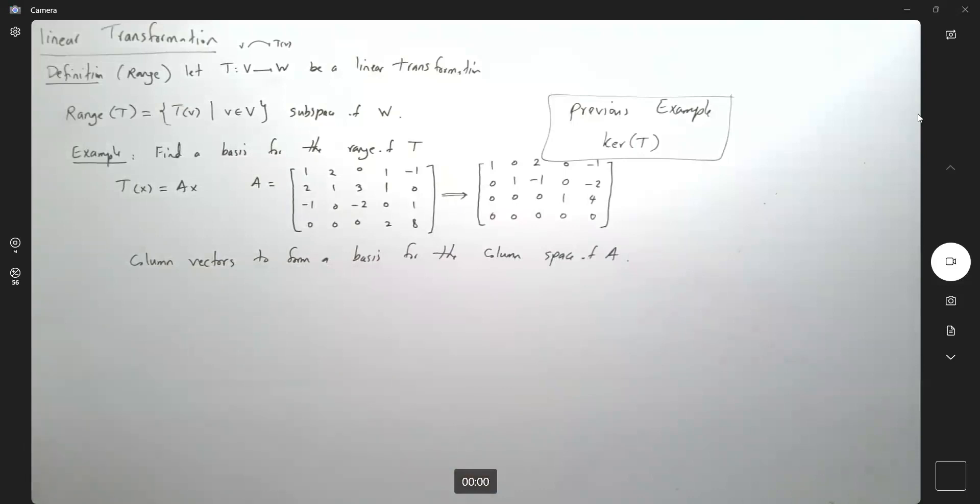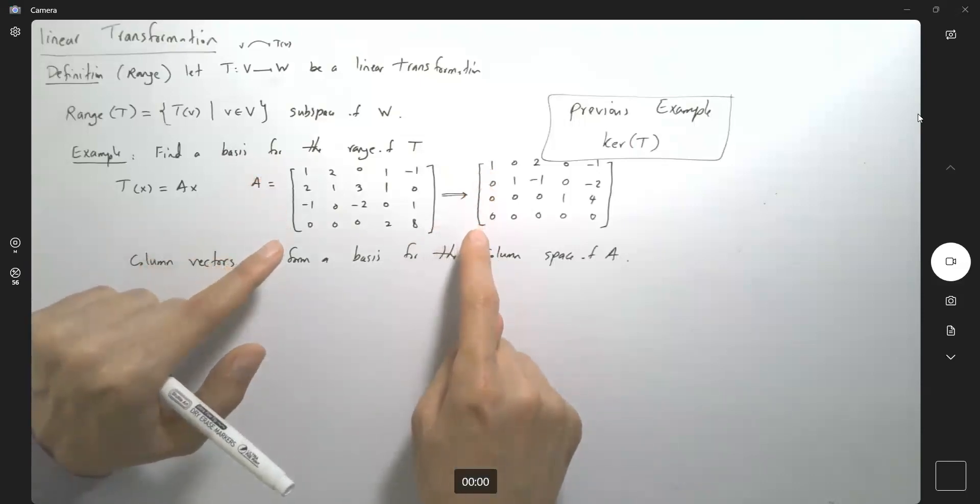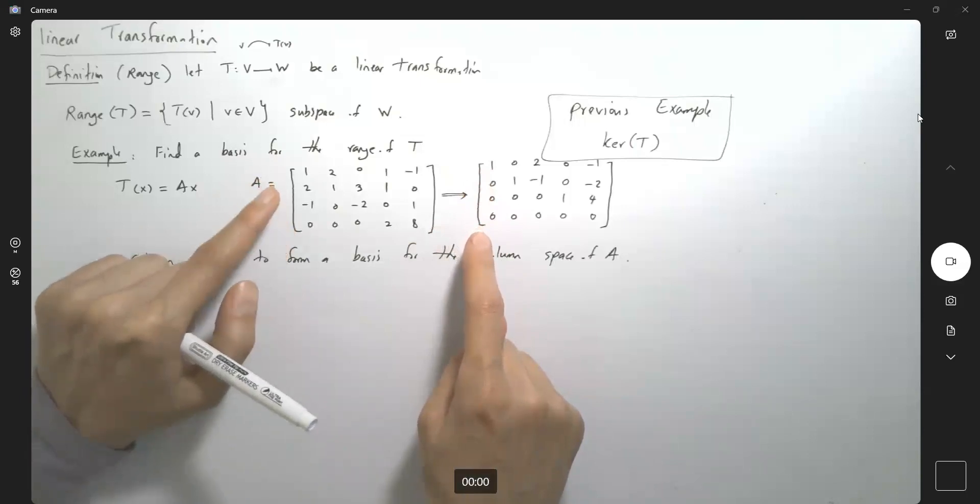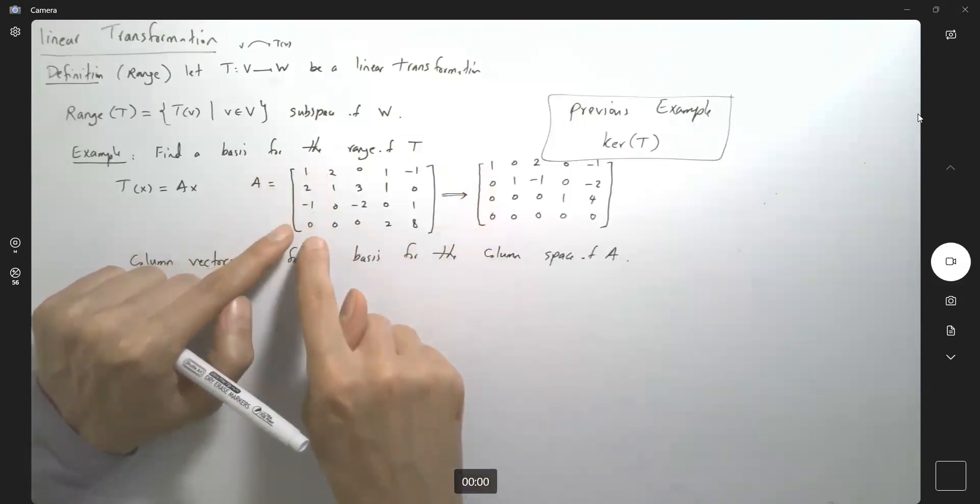So basically what do we have here? We have the following. So the very first column is associated to 1, 2, negative 1, and 0.